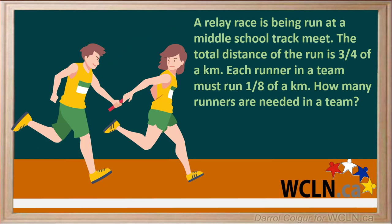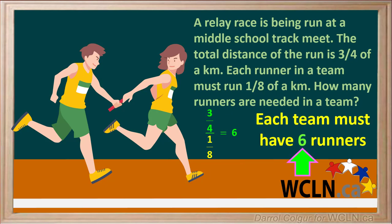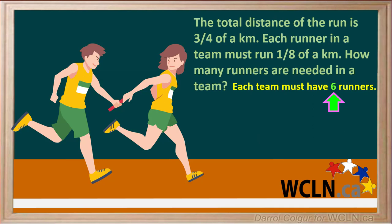So looking at our original question, which states the total distance is 3 quarters of a kilometer and each runner must run 1 eighth of a kilometer, we now know that 3 quarters divided by 1 eighth is equal to 6. So 1 eighth goes into 3 quarters 6 times. Therefore, each team must have 6 runners. Let's check our answer. If each team has 6 runners and each runner runs 1 eighth of a kilometer,